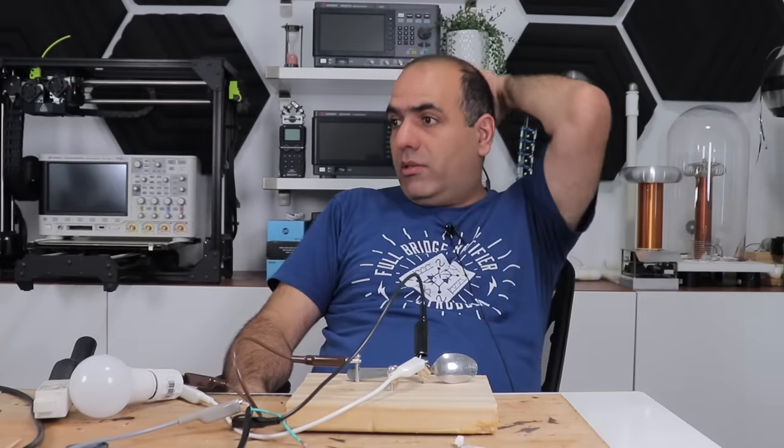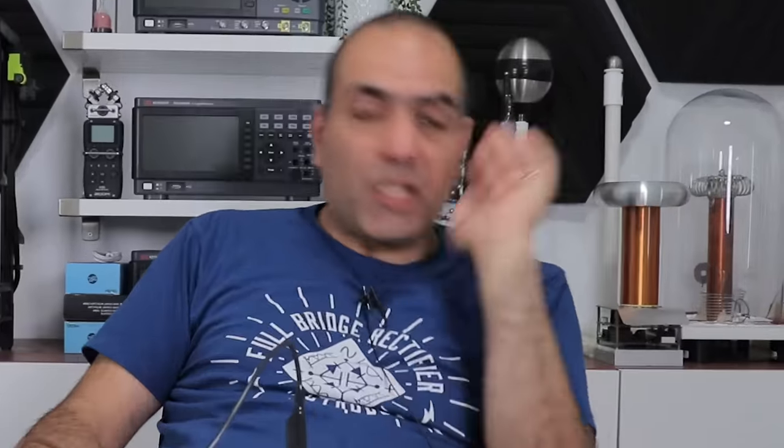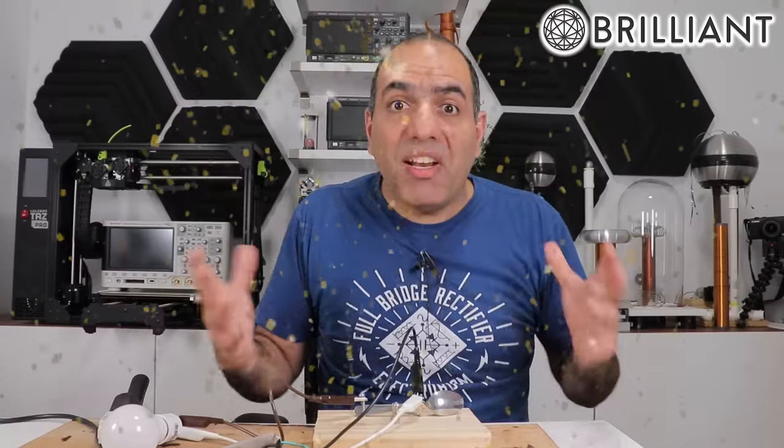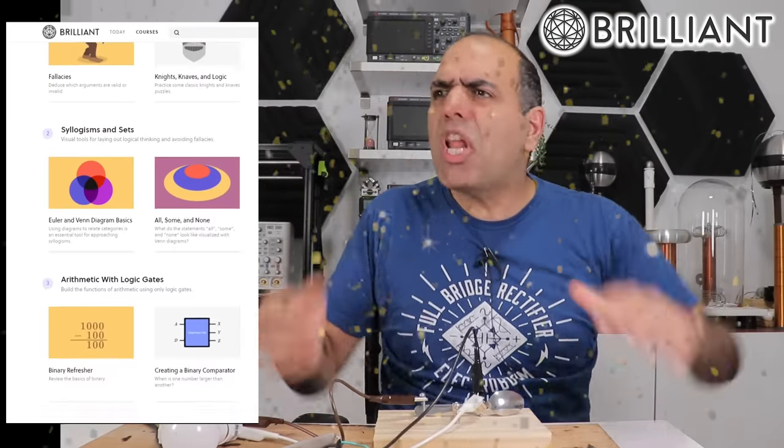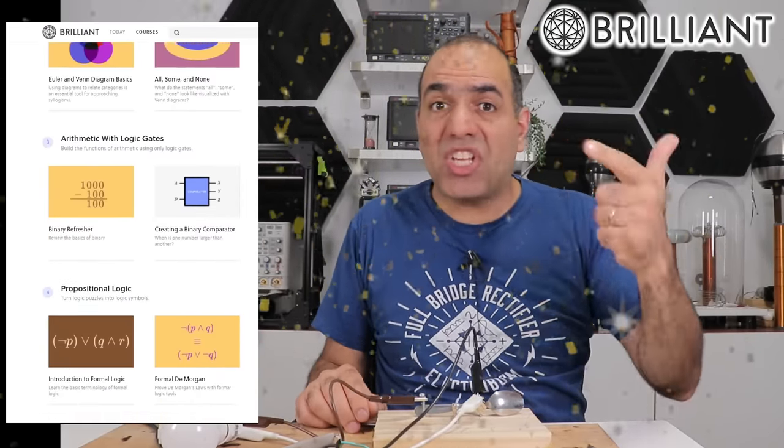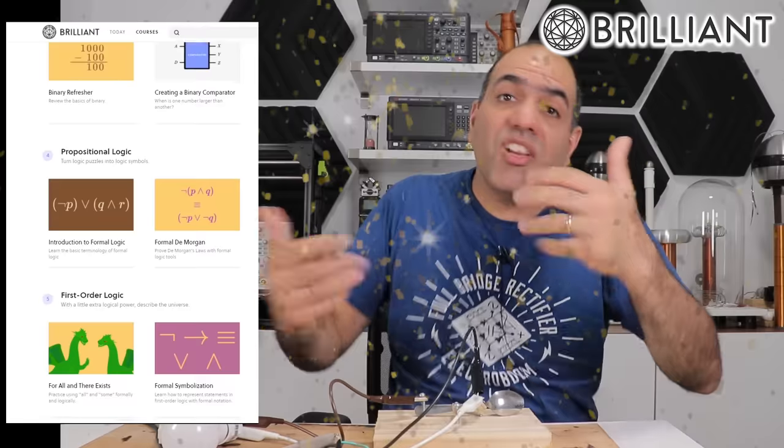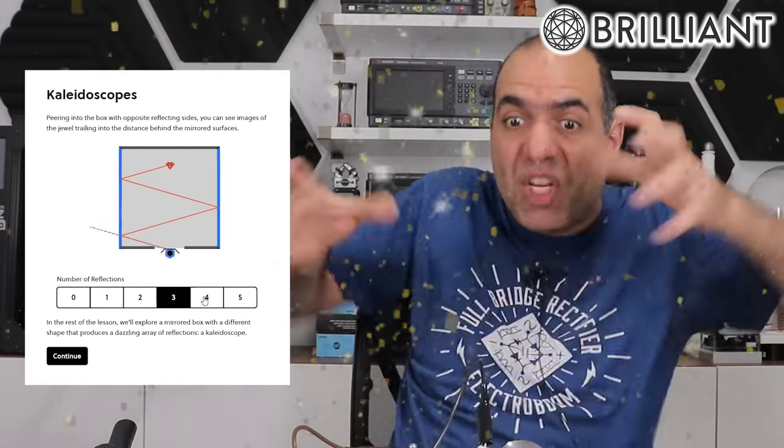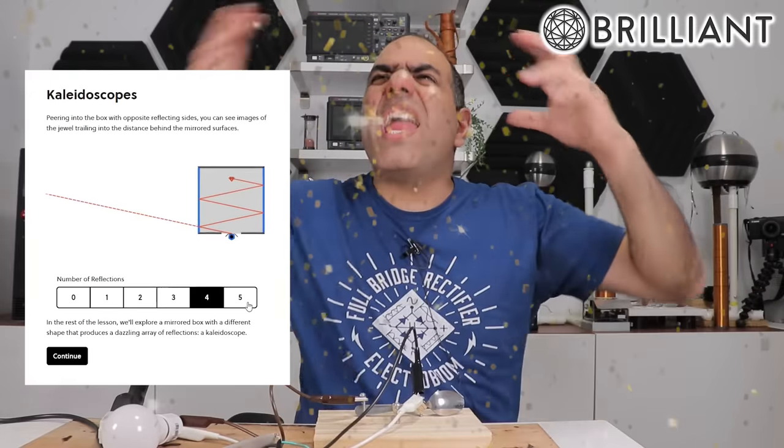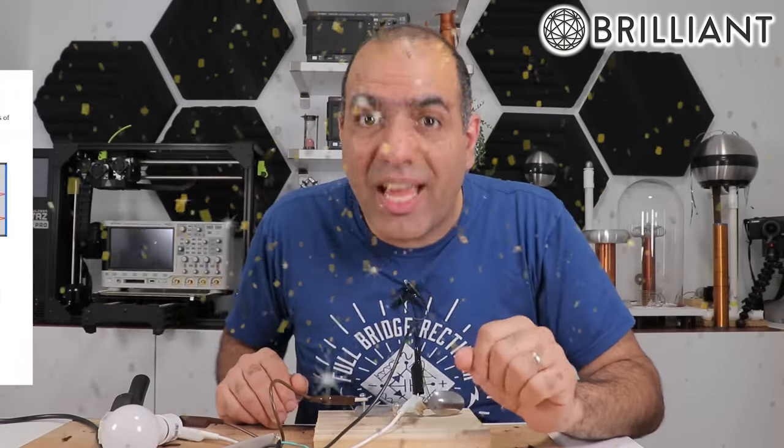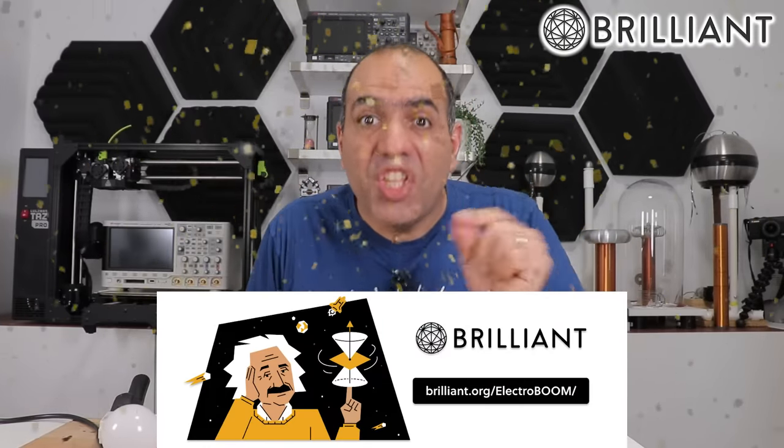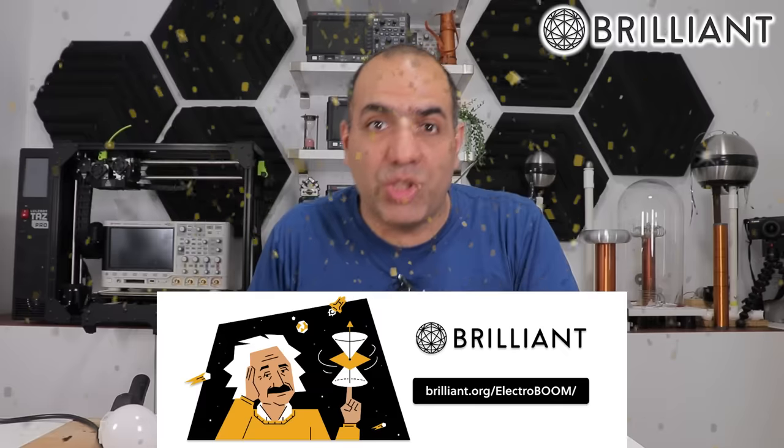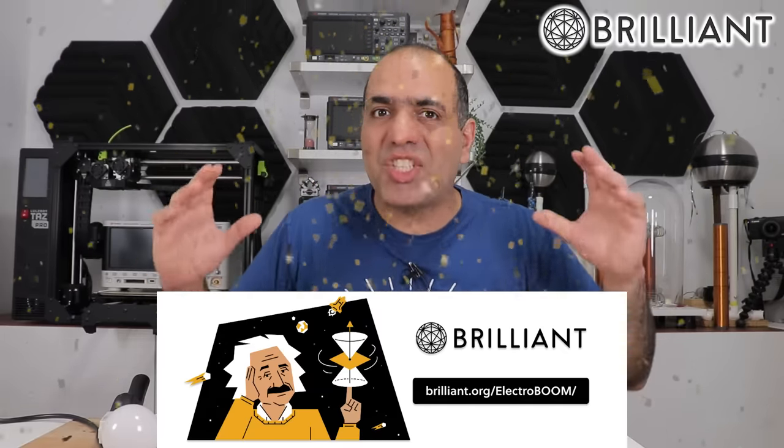Maybe I should have just made relay logic, but no, today is relay day. Then you can learn the logic itself from my sponsor Brilliant. Brilliant is a website and app to learn many things about math, science, and computing, like logic, with highly interactive courses where you learn by doing it. So become way more productive using Brilliant and get 20% off of a year of Brilliant premium membership using brilliant.org/electroboom.